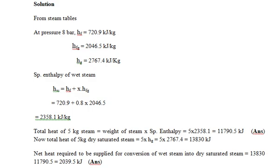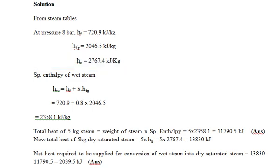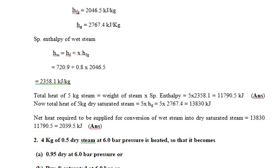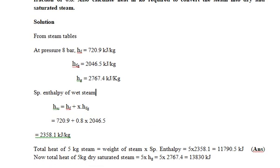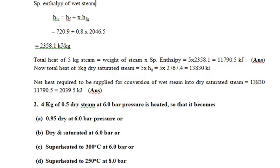The total heat of five kilograms of wet steam is 11,790.5 kJ. To find the heat required to convert wet steam into dry saturated steam, the heat in the dry saturated steam for five kilograms using hg = 2764 kJ/kg multiplied by five gives 13,820 kJ. The net heat required to supply for conversion of wet steam to dry steam is found by subtracting: 13,820 minus 11,790.5 equals approximately 2039.5 kJ. This 2039.5 kJ is the amount of heat required to convert the wet steam into dry saturated steam. This is the end of the first numerical.